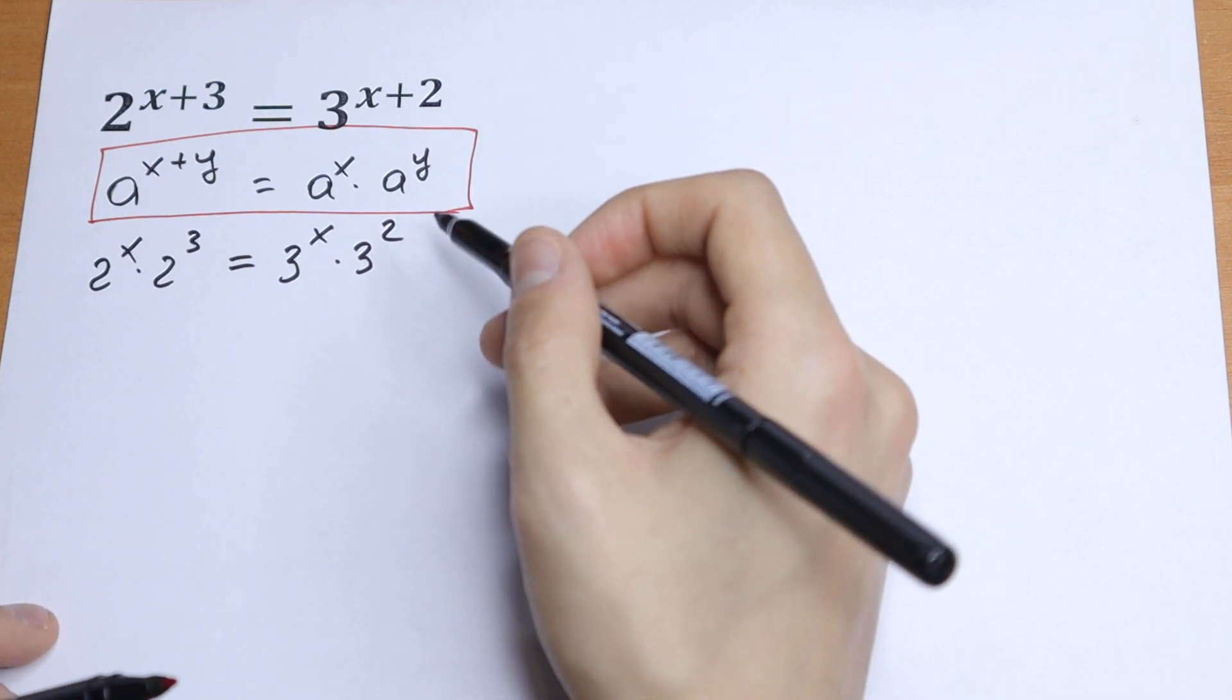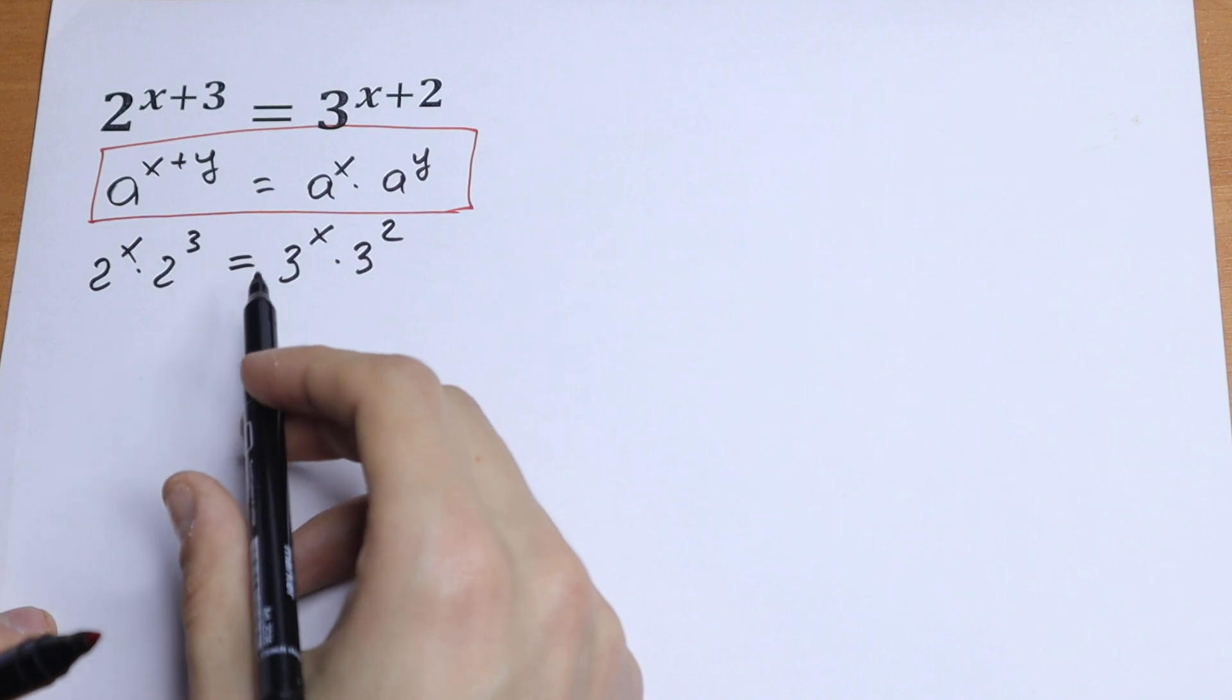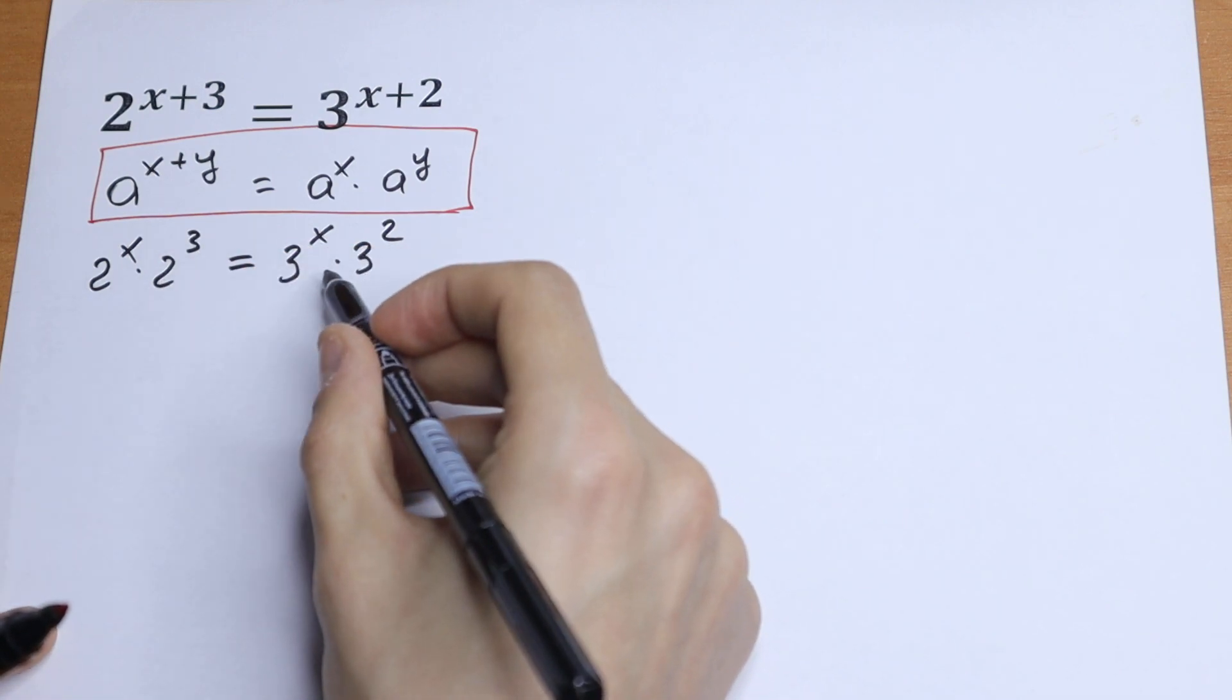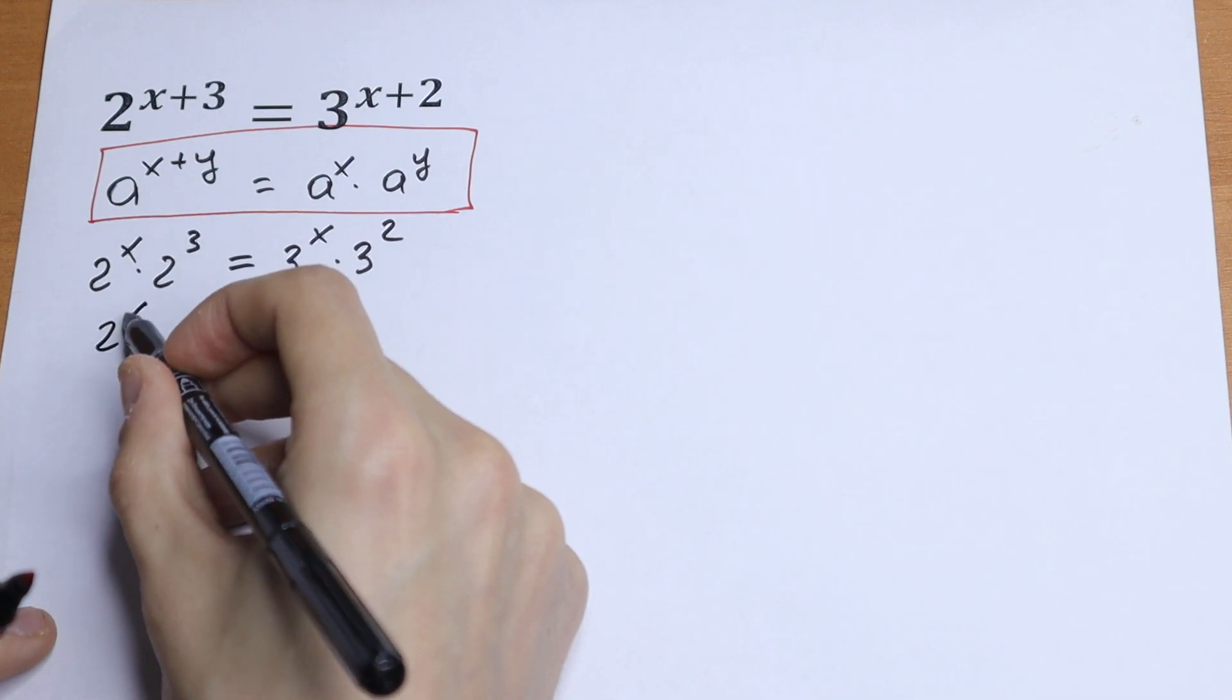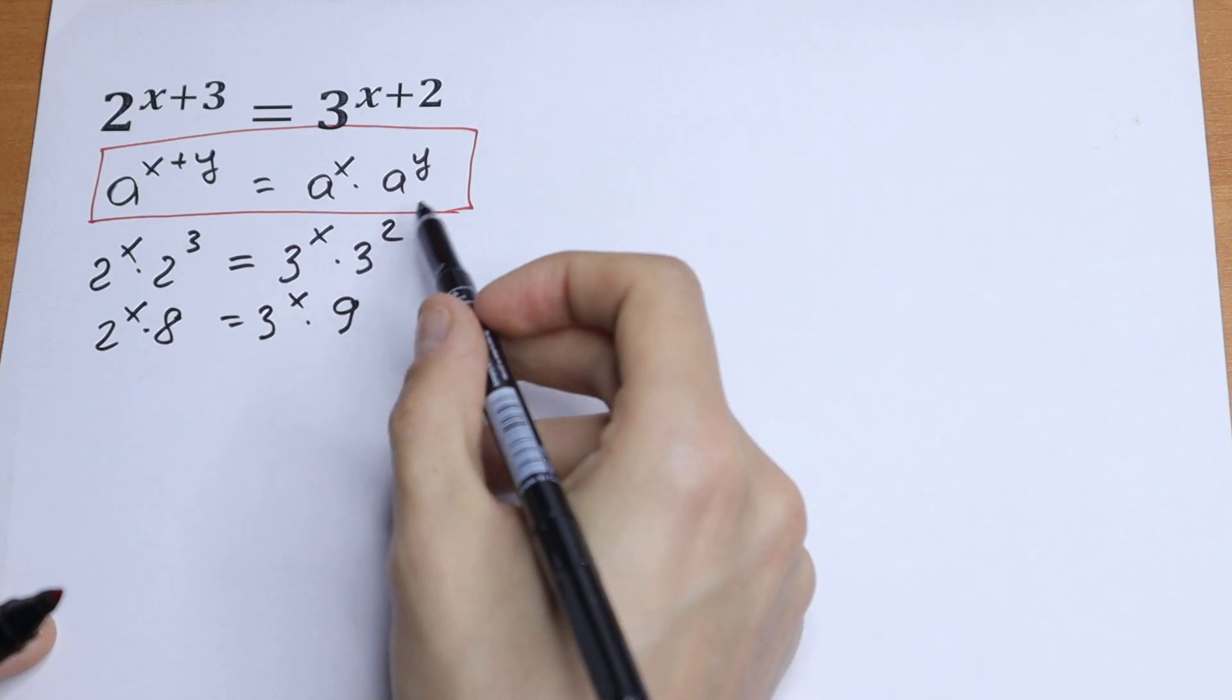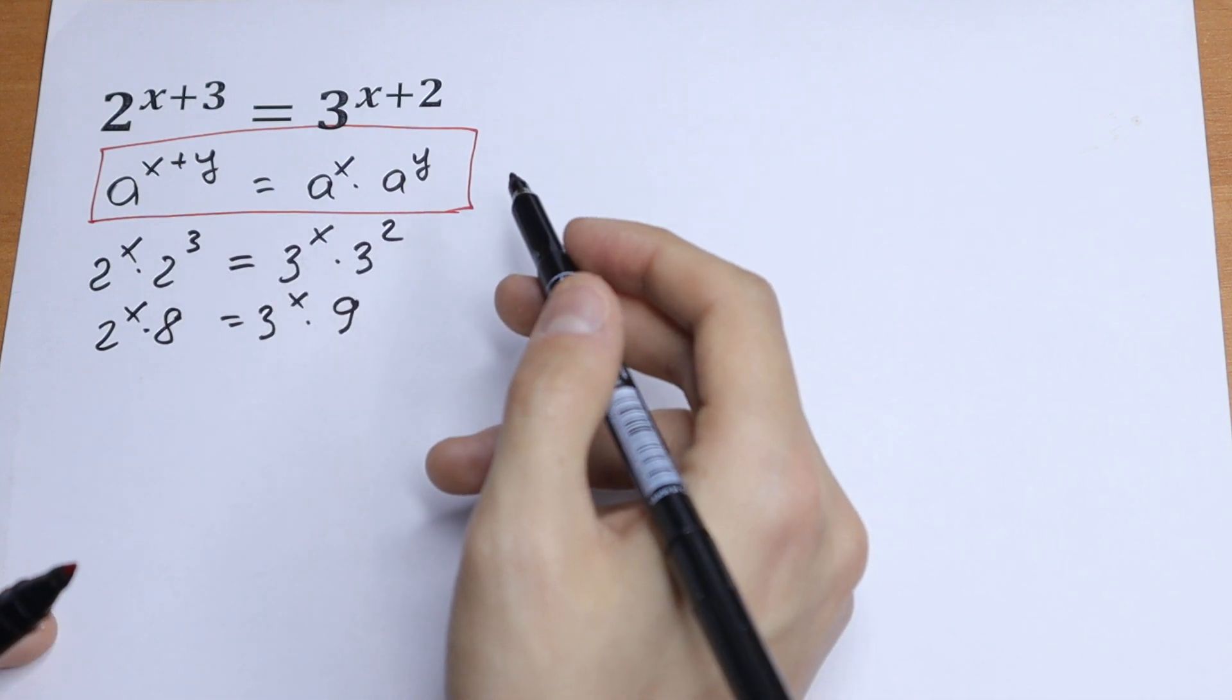What we're going to do next? We can simplify this a little bit. We can write this as 8 and this as 9. 2 to the power x times 8 equals 3 to the power x times 9.